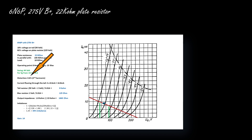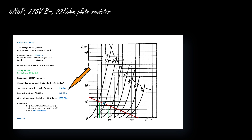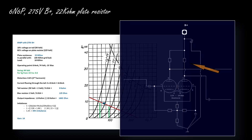The current flowing through the tail is 16.8 milliamps, from which I can calculate the tail resistor and bias resistor values. The output impedance is much lower than the figure achieved with the ECC81. However, these very good specifications come at a price: a higher unbalance of 34%. To implement a phase splitter with this tube, the plate resistor on the right should be 34% higher than the plate resistor on the left.